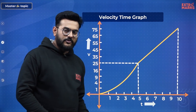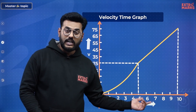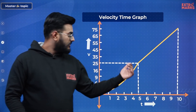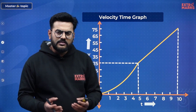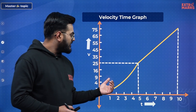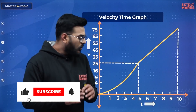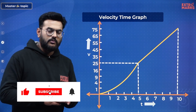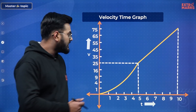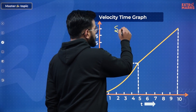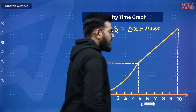The VT curve looks like this: for the initial 5 seconds, velocity changes parabolically with time, and for the next half, velocity has a linear change with time. Now I'm going to find position-time values from this VT curve. The area the VT curve makes with the time axis gives displacement — that is, change in position.